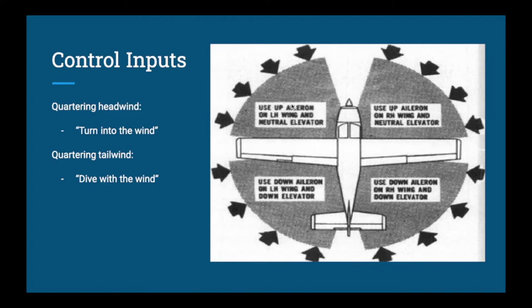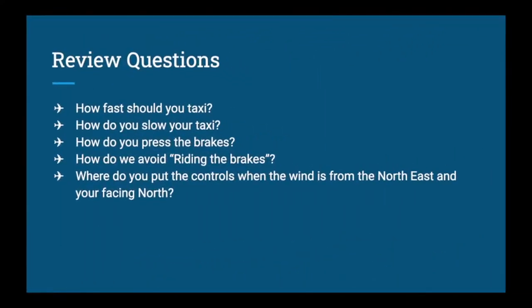For a front-right quartering headwind, turn the yoke to the right with neutral elevator. Looking at quartering tailwinds: for a rear-right tailwind, use down aileron on the right wing — push the control forward and turn it to the left. You can use the memory aid 'dive with the wind' — dive toward where the wind is going. For a quartering left tailwind, go forward and right with the controls. These taxi control inputs help keep the airplane on the ground in wind.